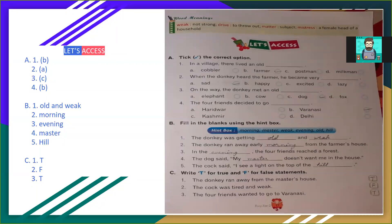Part C, write T for true, F for false statement. True ke liye, true statement ke liye, sahih statement ke liye T likhna hai, aur galit statement ke liye F likhna hai. First, the donkey ran away from master's house. Donkey apne malik ke ghar se bhaag jata hai. True hai, aap log T likhye ga.